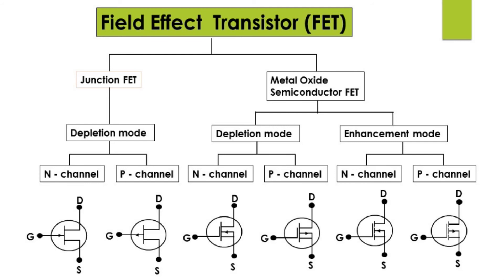In enhancement mode also we have N-channel MOSFET and P-channel MOSFET. The difference in the circuit symbol between depletion mode and enhancement mode is that in enhancement mode the channel line will not be a solid line but will appear as a dashed or broken line. In a future lecture, I will explain in detail how JFET operates in N-channel and P-channel, and how MOSFET operates in depletion mode and enhancement mode. This has been a basic introduction to Field Effect Transistors.